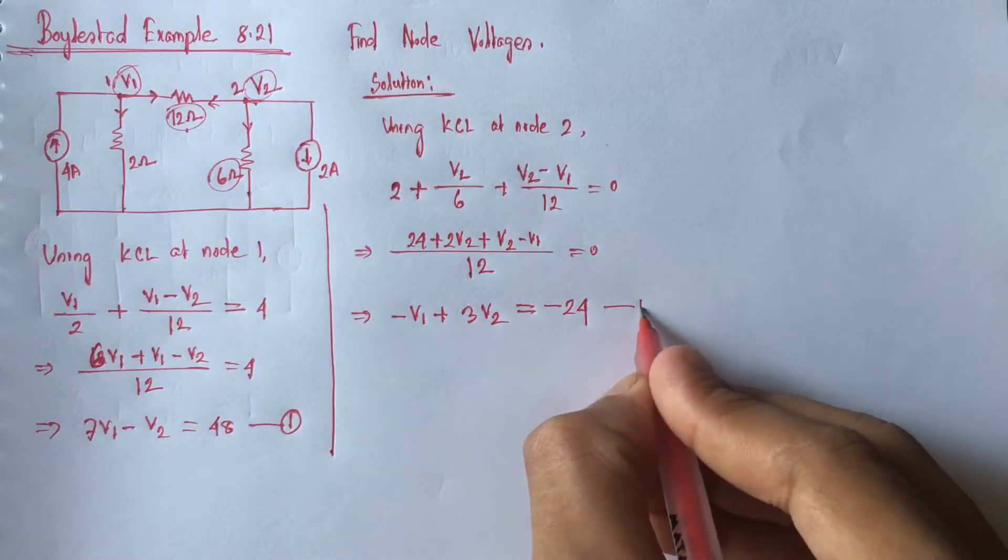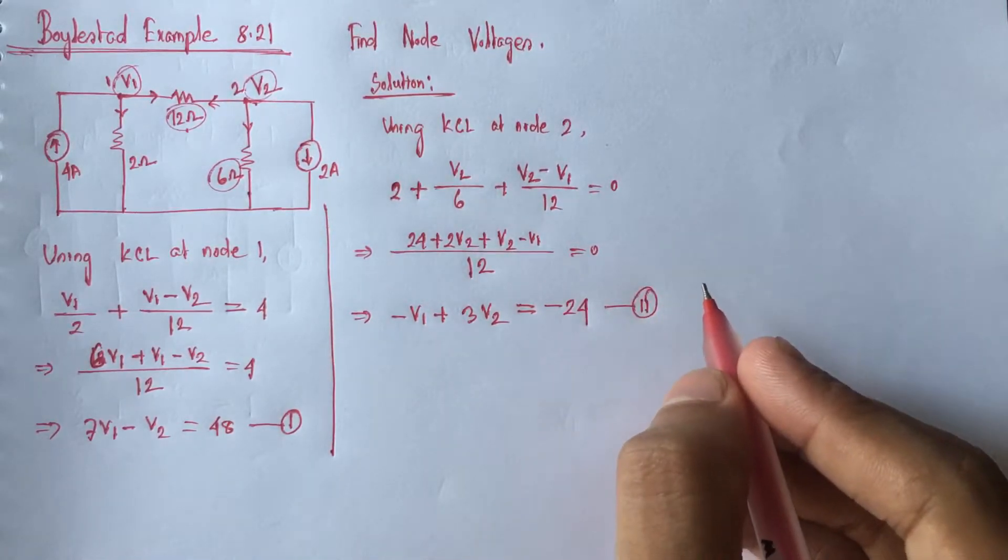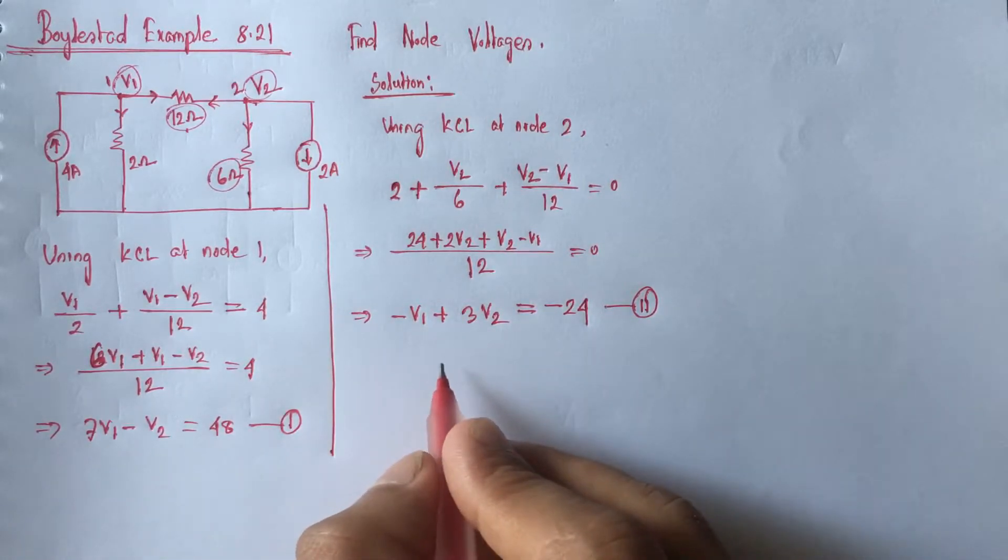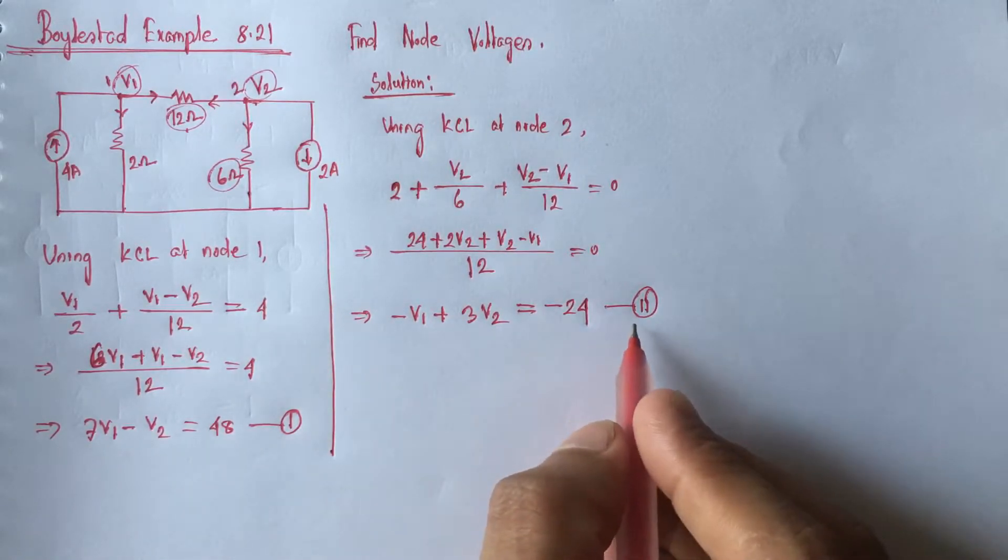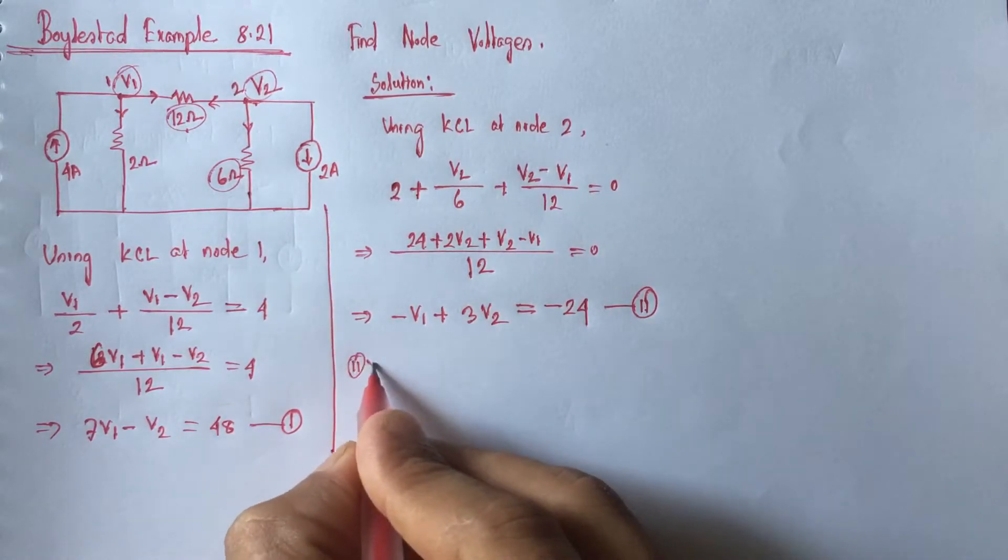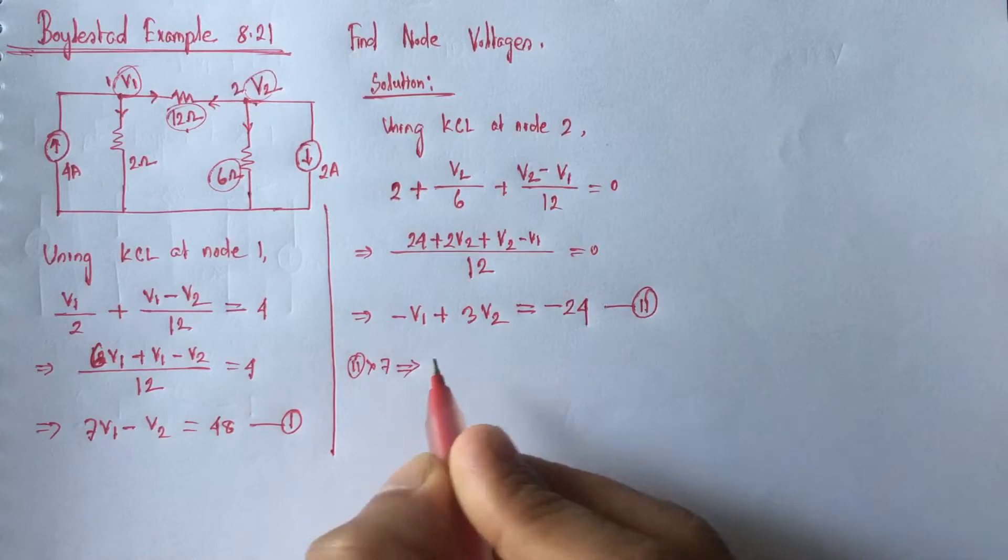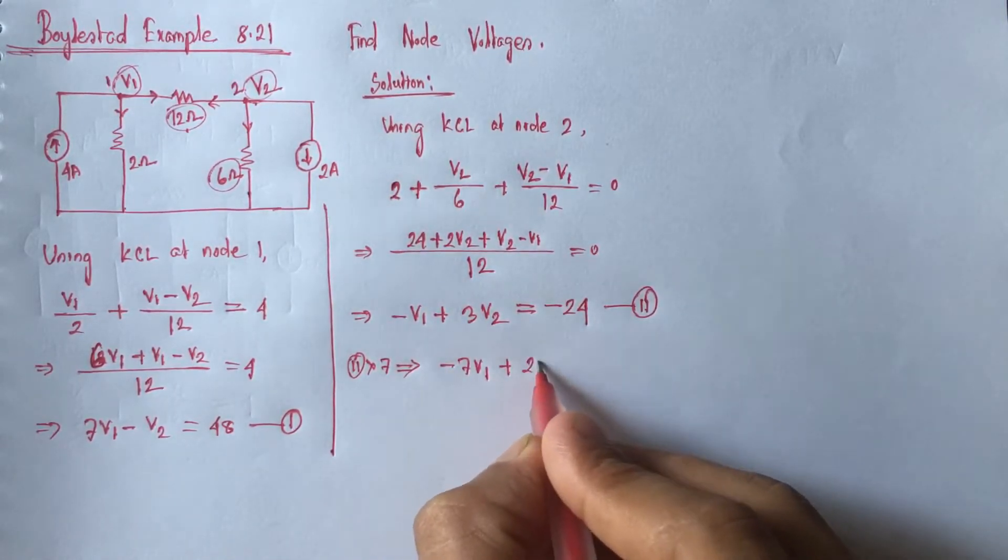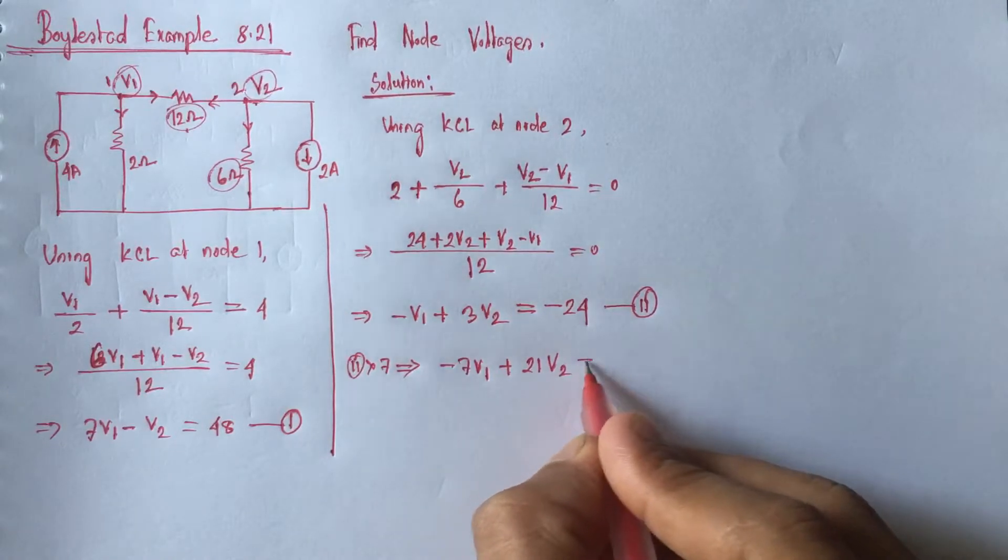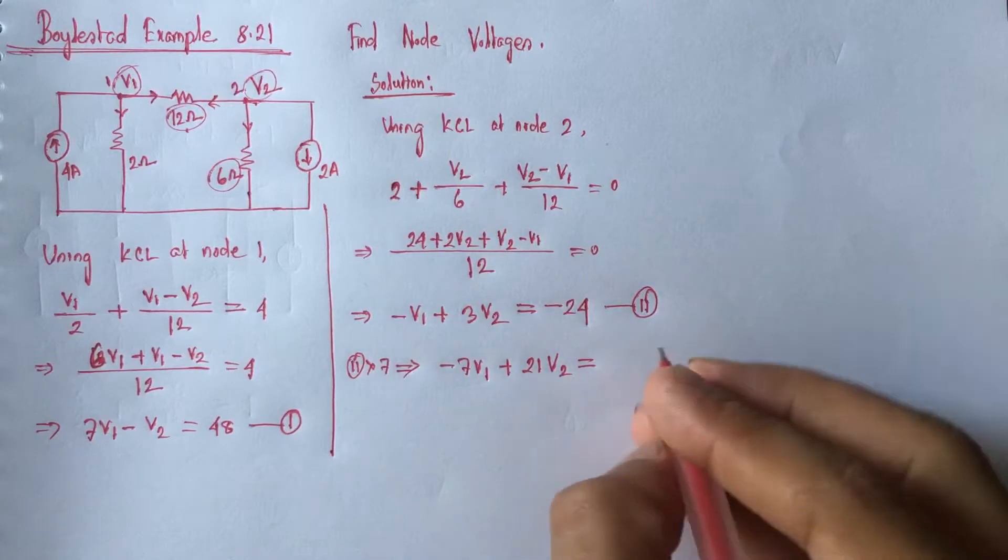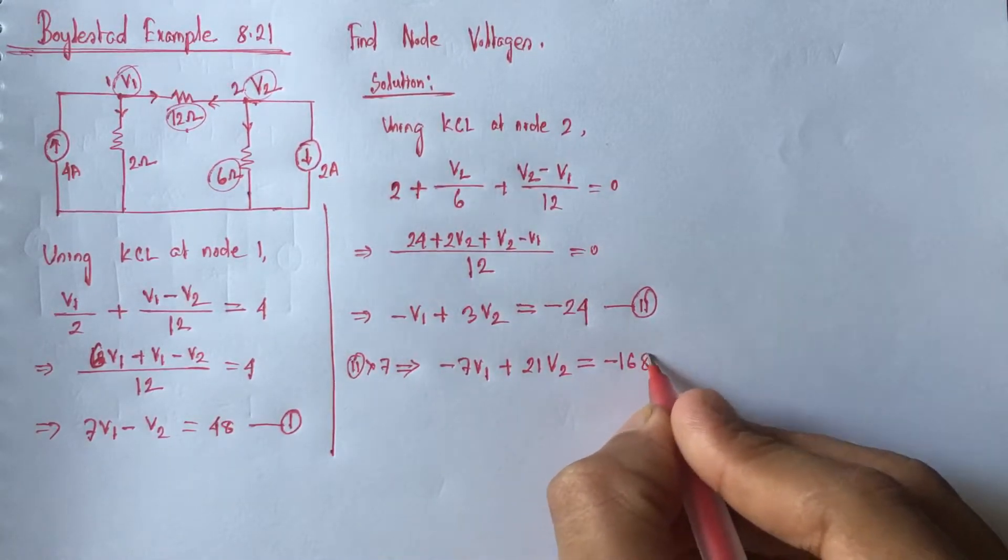Now, let this equation be equation 2. So, if we multiply equation 2 by 7, we will get minus 7V1 plus 21V2 equals minus 168.